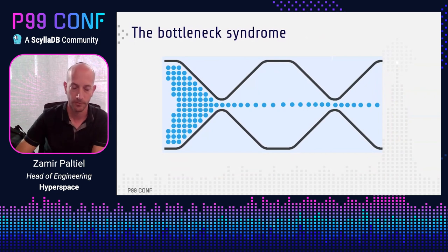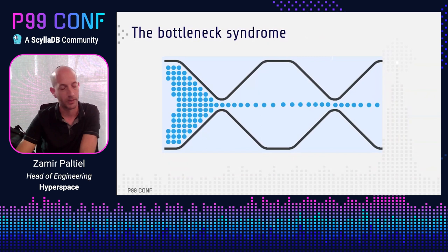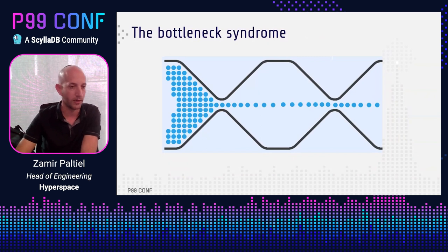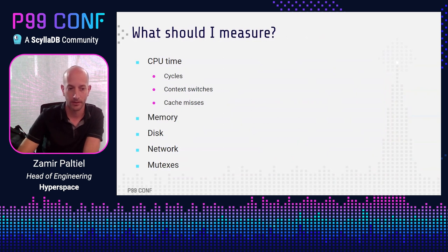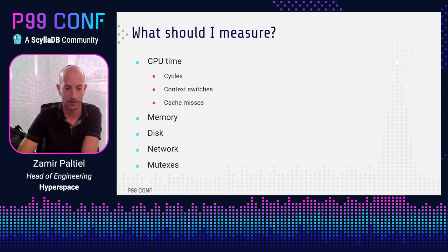So what should you measure? First of all, CPU time, because it's very easy to correlate between CPU time and the amount of time that the code spends at that point, as opposed to memory, disk, and network, which are harder to correlate. Obviously, you should also measure mutexes and locks in your code.